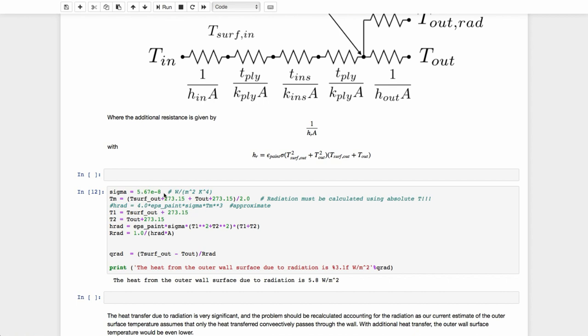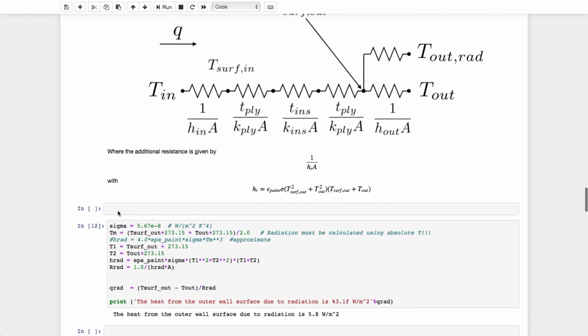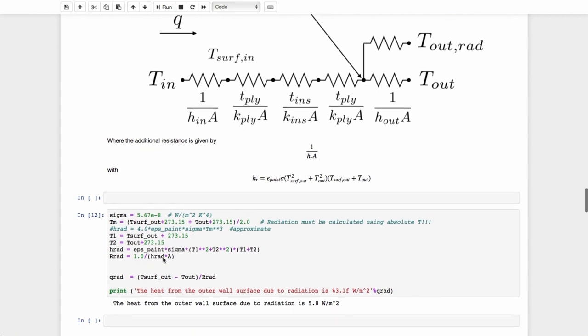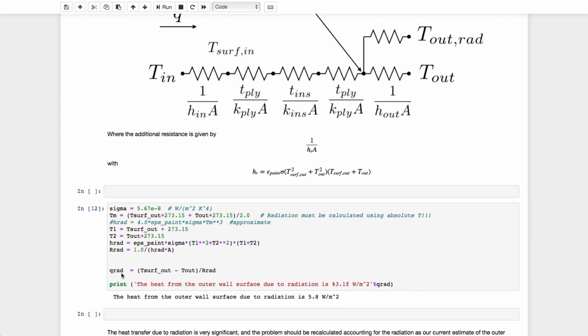I've added the Stefan-Boltzmann constant here, and I'm calculating simply a T1 and T2, where by T1 and T2 here, I mean the temperature across this resistor that I'm going to calculate. And so T1 will be my T_surf_out that I just calculated from above, my current estimate of this temperature at this point on the surface, the outer surface of the plywood. And T2, of course, is my outer temperature, T_outside expressed in Kelvin. So then I can calculate the radiation heat transfer.